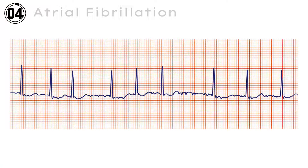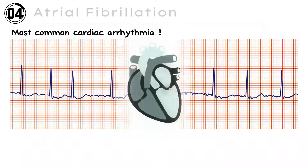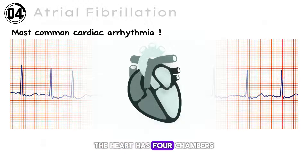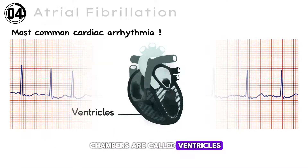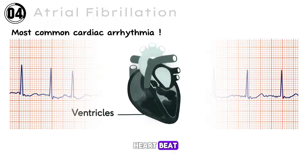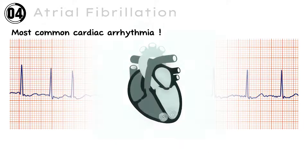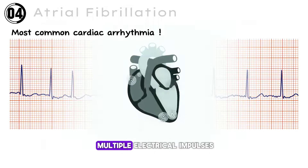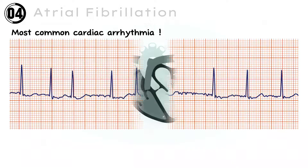ECG number 4: Atrial Fibrillation — the most common type of cardiac arrhythmia. The heart has four chambers; the upper two are called atria and the lower two are called ventricles. Normally the sinus node in the right atrium sends electrical impulses to the ventricles. But in atrial fibrillation, other areas of the atrium also send out multiple electrical impulses, forcing the atria to twitch, which we can see in the ECG.